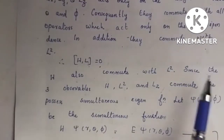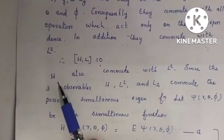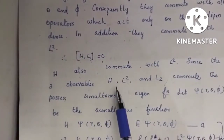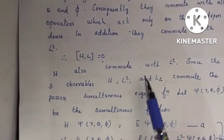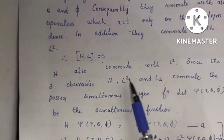Since the three observables H, L-squared, and Lz all commute with each other, they possess a simultaneous set of eigenfunctions.